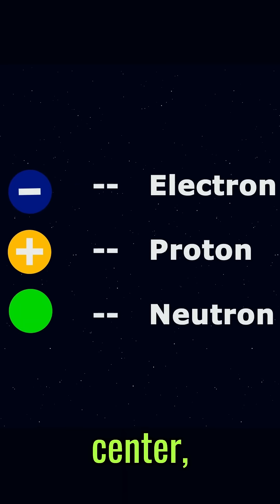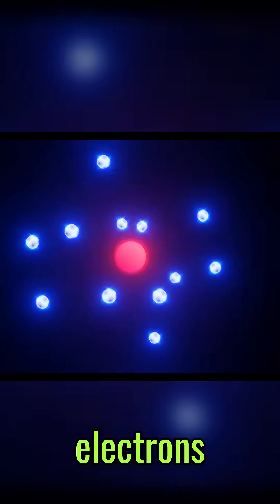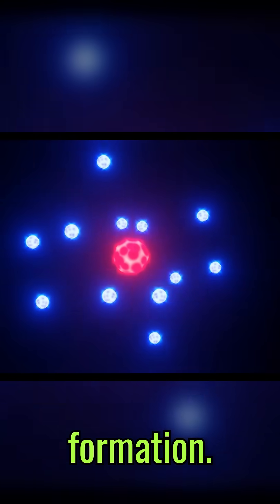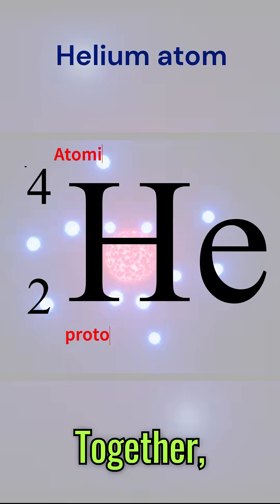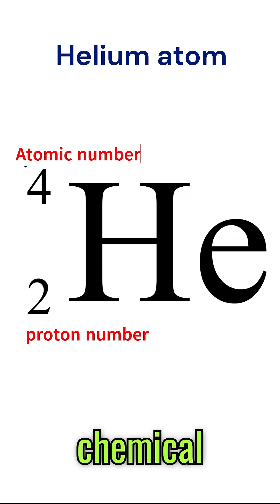Protons and neutrons reside at the center, forming the nucleus, while electrons whirl around in a cloud-like formation. Each atom is uniquely defined by its number of protons, which we call its atomic number. Together, these particles form the smallest unit of a chemical element.